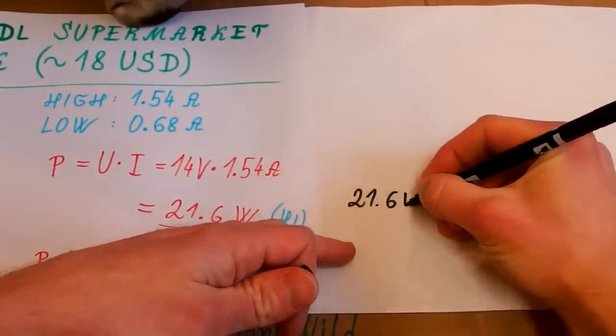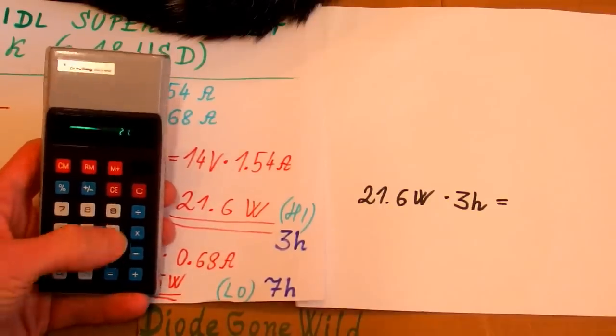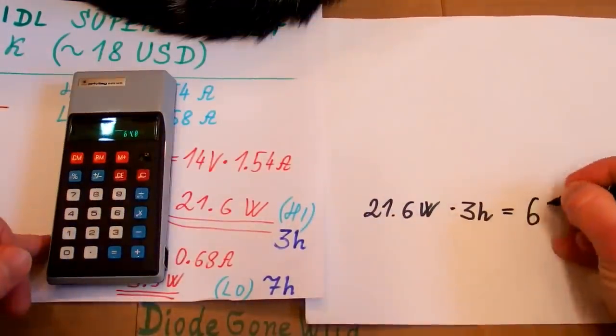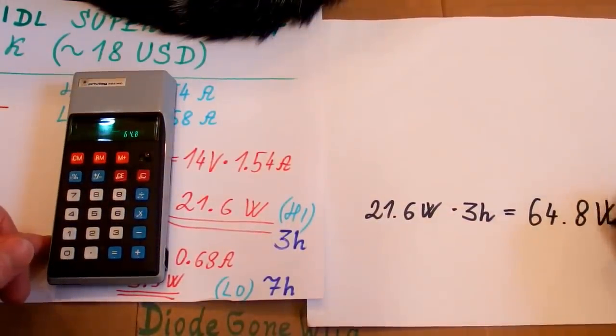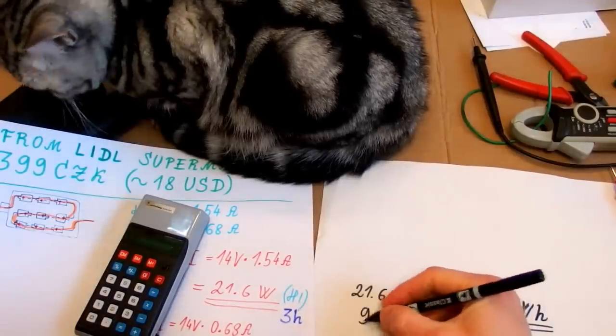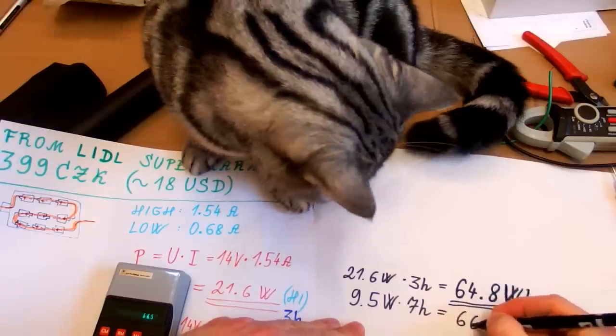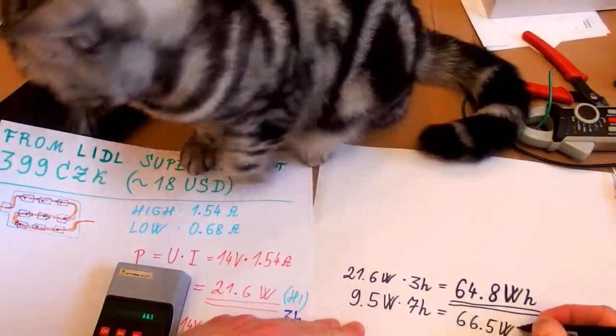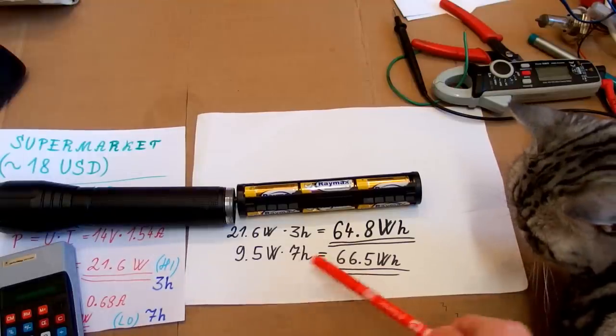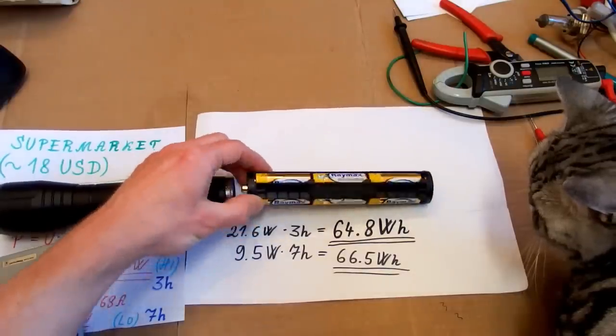21.6 watts for 3 hours means 21.6 times 3 is 64.8 watt hours. And at the low power it's 9.5 watts for 7 hours. 66.5 watt hours. Which is quite close to this. So this is the energy required for this time of operation at this power. Now the question is, do those batteries contain this much energy?